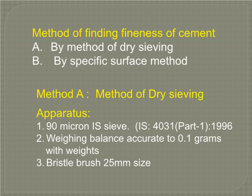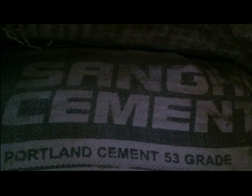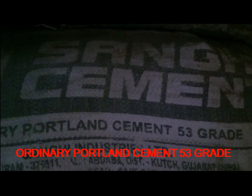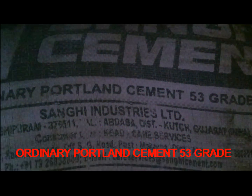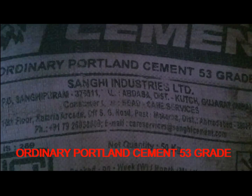The apparatus used in this test is a 90 micron IS sieve, a weighing balance, and a bristle brush. Here you can see in the video we take Shanghi branded cement — we are using Ordinary Portland Cement 53 grade.